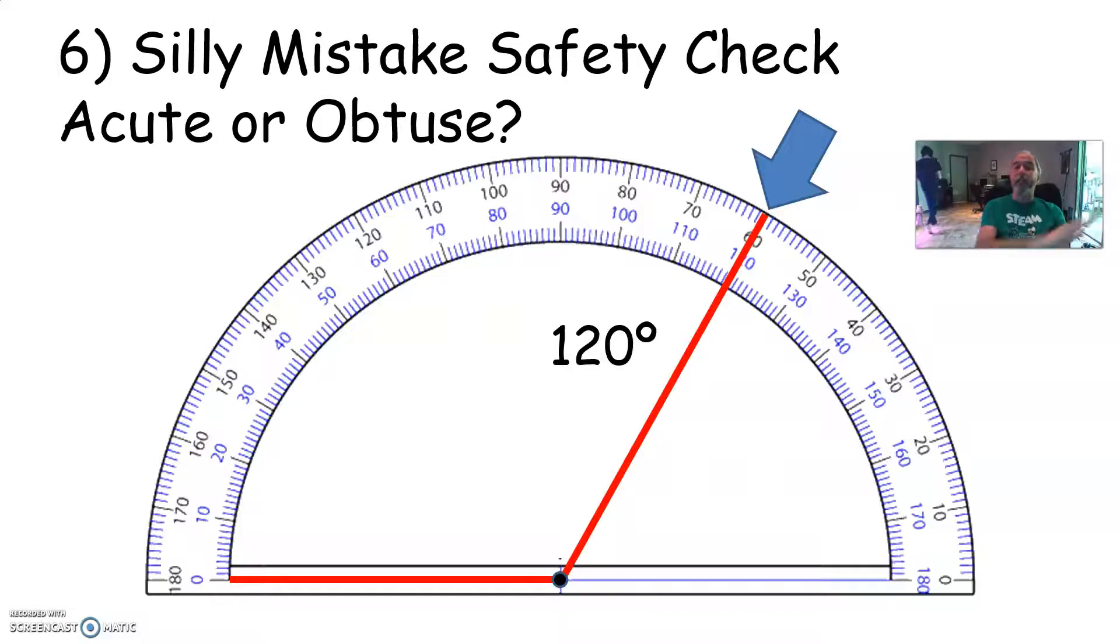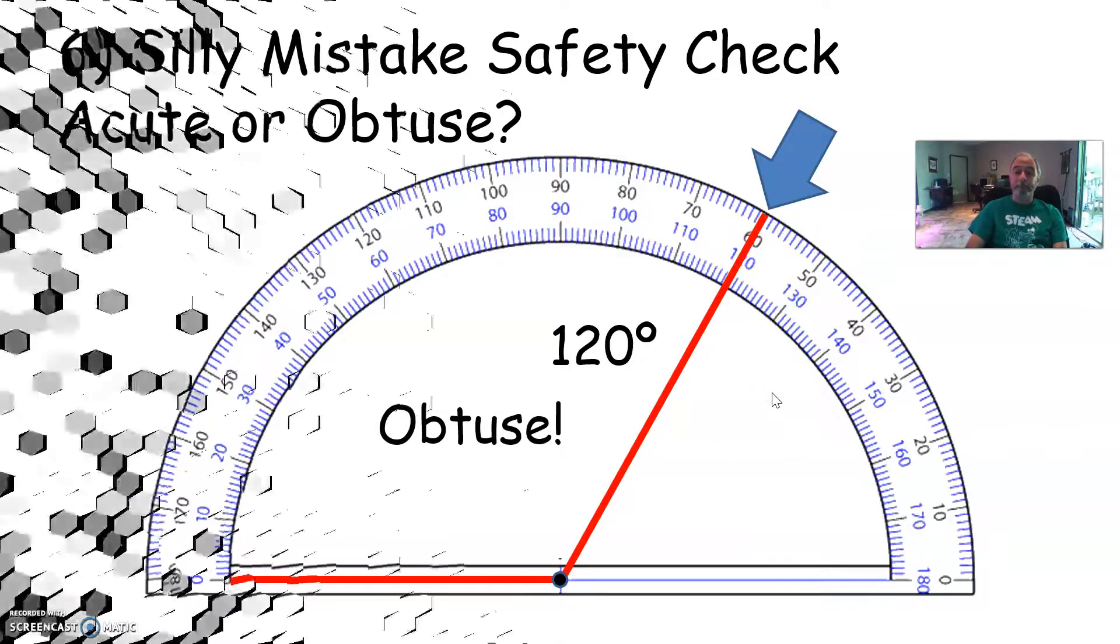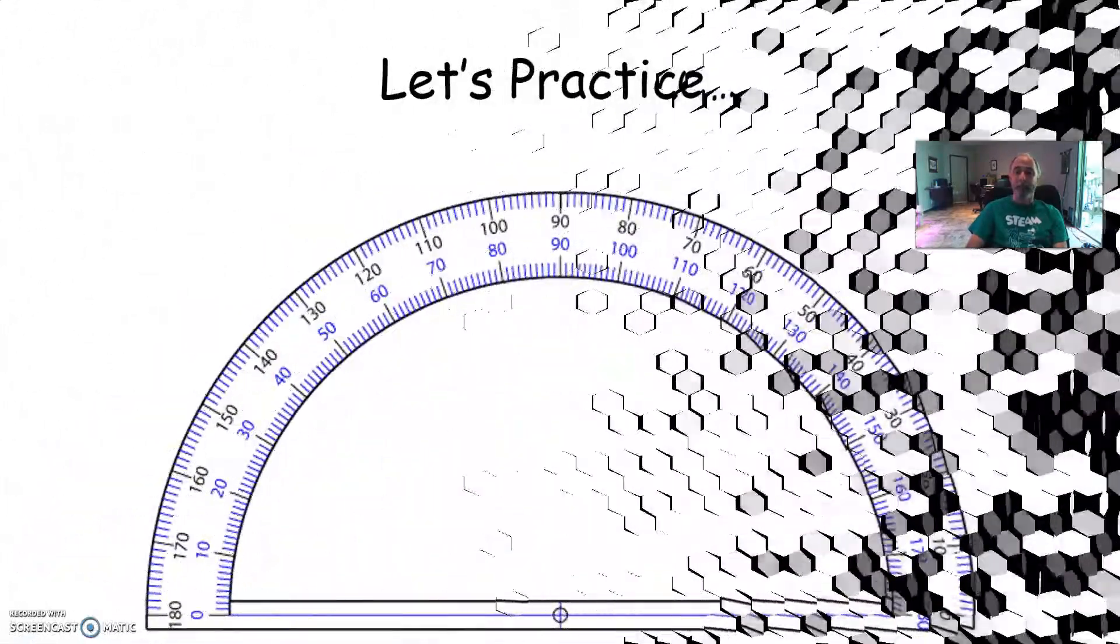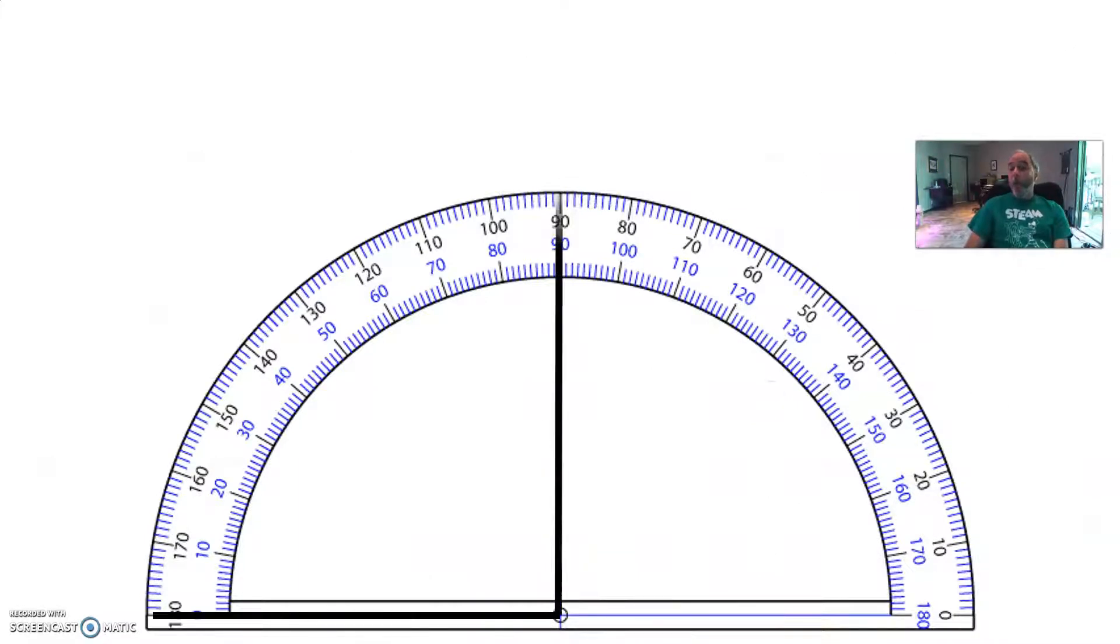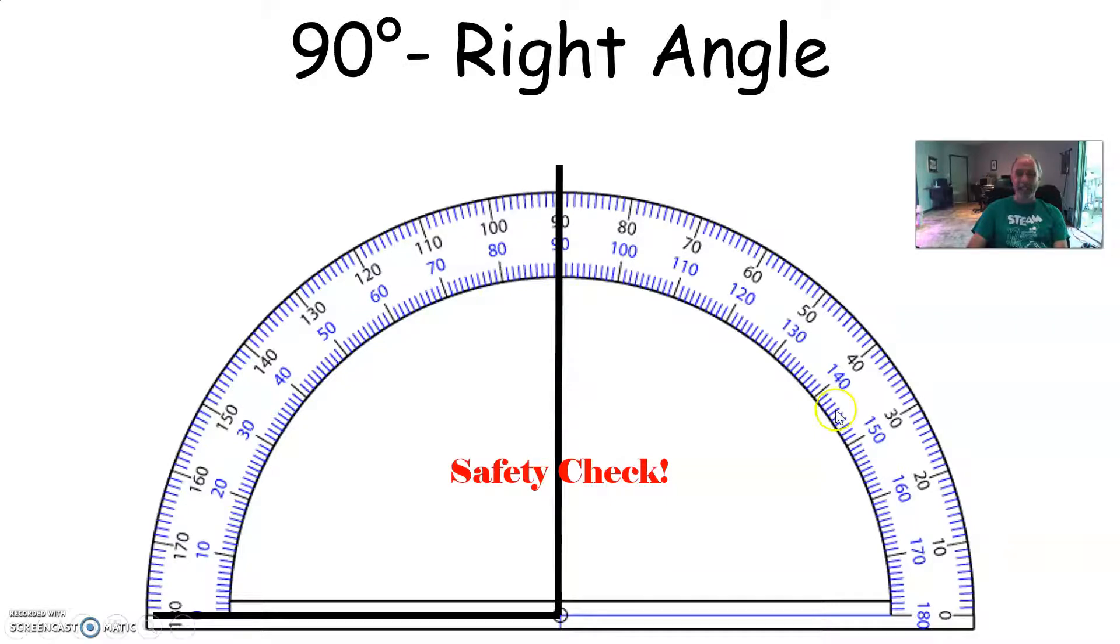Silly mistake safety check. Is this an acute or an obtuse angle? And yes, you guessed it. This is an obtuse angle, so I should not be measuring 60. I should be measuring 120 degrees. All right, let's practice, shall we? What does this angle measure? And if you need to hit pause, hit pause so that you can figure it out. Okay, I'm assuming you're unpaused. You're done thinking. What is this measure? Safety check. You sure you're right? That's right. It is a 90-degree angle.